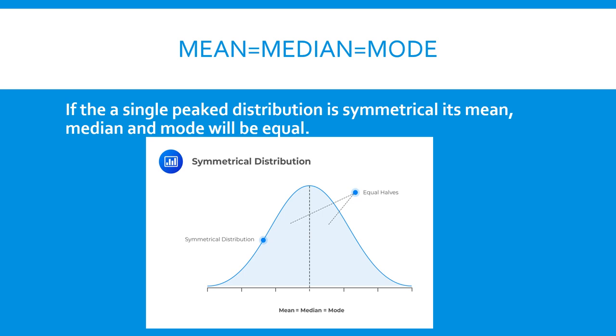اب اگر distribution symmetrical نہ ہو تو اسے asymmetric distribution یا skew distribution کہتے ہیں۔ آئیے دیکھتے ہیں کہ اس صورت میں mean، median اور mode کا کیا relationship ہوگا۔